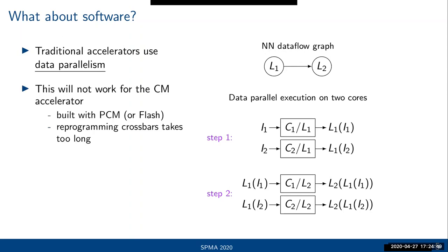This standard one-layer-at-a-time approach will not work for the computational memory accelerator. The reason is that the technology we use — PCM or flash — means reprogramming the crossbar takes far too long for this approach to make sense, even with batching. Reprogramming a crossbar might take one minute or even longer.